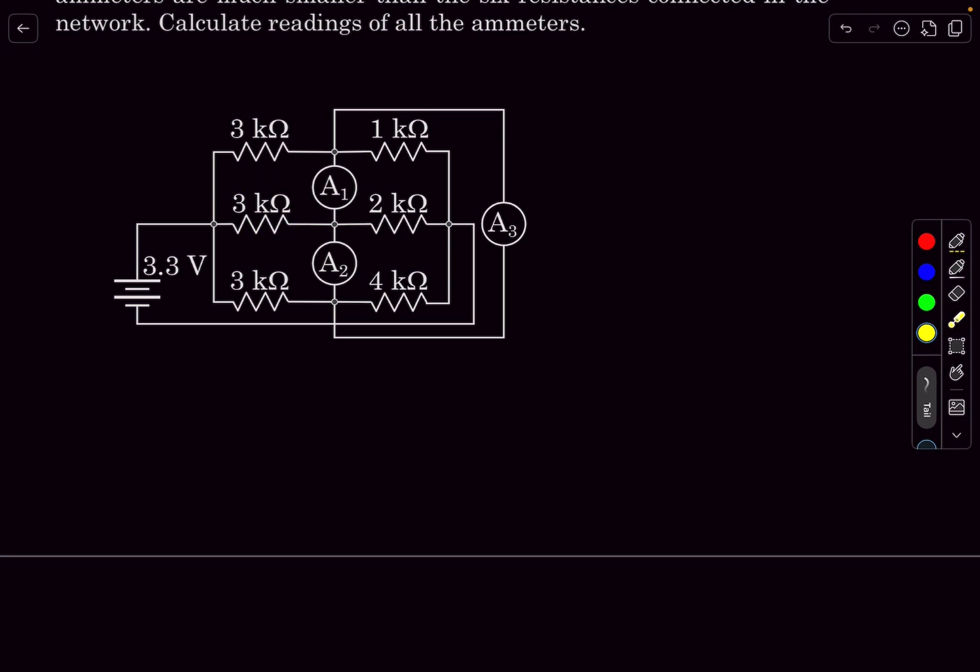Straight away we can see that if you observe all these three kilo ohm resistors, we can neglect the resistance of the ammeter for now. It's clear that these three kilo ohm resistors are in parallel, and if they are in parallel the current multiplied by the resistance must be a constant.